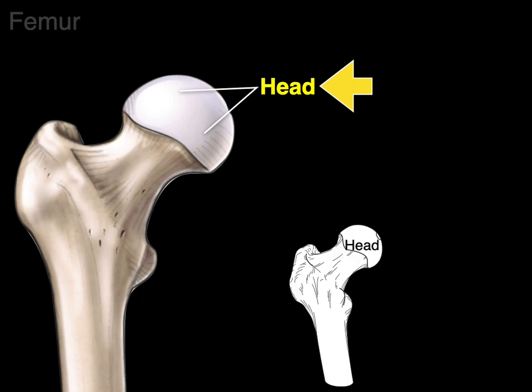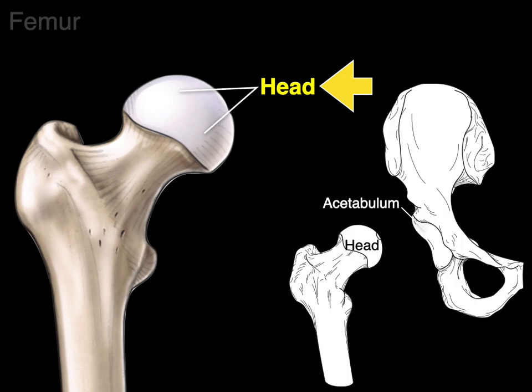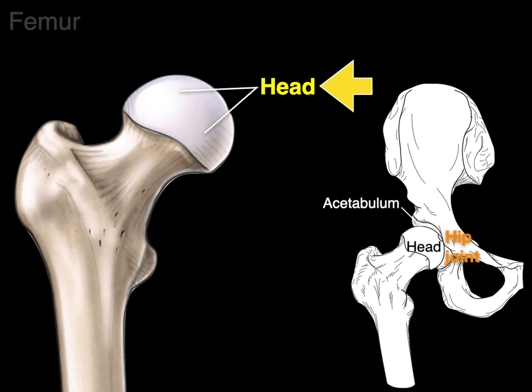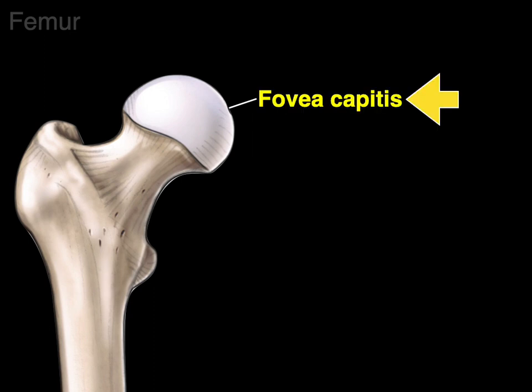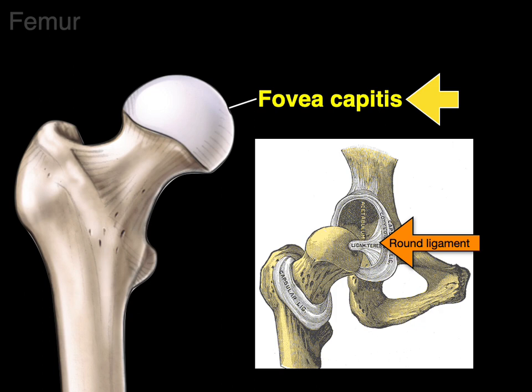The head of the femur articulates with the acetabulum of the os coxa to form our synovial hip joint. Next, we have this little divot proximally on the head of the femur — that's the fovea capitis, and that's where the round ligament, or ligamentum teres of the femur, attaches.